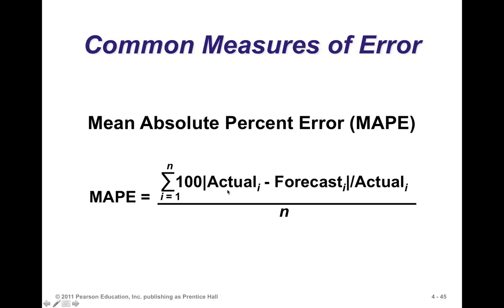The mean absolute percent error is actually my favorite measure because it takes the absolute deviations and expresses them in the form of a percentage. What we do is take the actual deviation and express it as a fraction of the actual. So if the actual demand was 100 and the forecasted demand was 80, the error is 20 units. Since 20 divided by 100 means we were off by 20%, that to me is more tangible. If you do that for all forecasts and average those percentages, you get a mean absolute percent error.